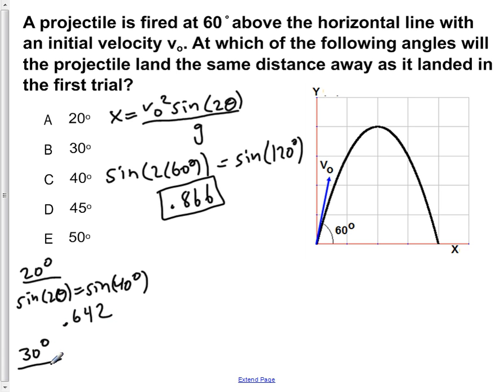If we do 30 degrees, sine of 2 theta, that's the same as sine of 60 degrees. If you calculate that out you get 0.866. So here we can see that 30 degrees does match up with our value here.